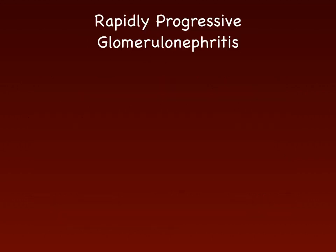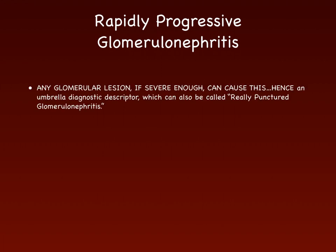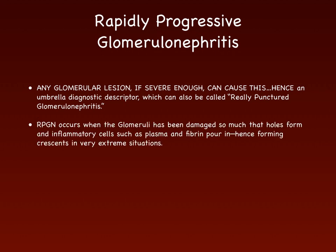This is a great segue into RPGN — rapidly progressive glomerulonephritis. Any glomerular lesion, if severe enough, can cause this; it is an umbrella diagnostic descriptor. RPGN occurs when the glomerulus has been damaged so much that holes form and inflammatory cells, plasma, and fibrin pour in, forming crescents. This happens in extreme situations — either a mild disease left untreated, or a disease that was already severe and progresses quickly.